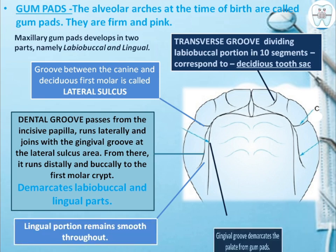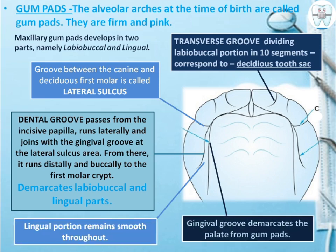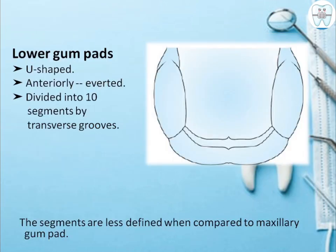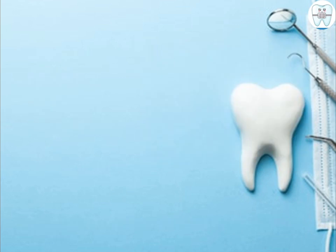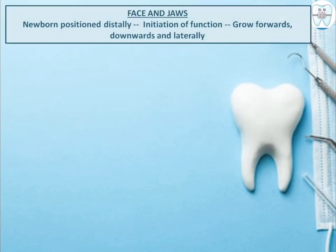The lingual portion remains smooth throughout. The gingival groove demarcates the palate from the gum pads. The lower gum pad is U-shaped, anteriorly everted, and is divided into 10 different segments by transverse grooves. These segments are less defined in the mandible as compared to the maxilla.